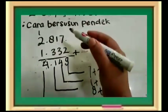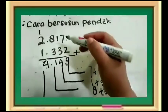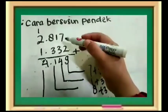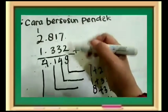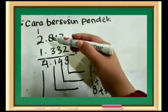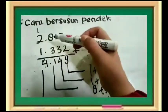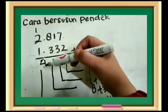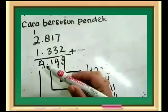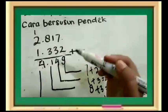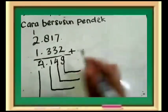Sebelum kita menjumlahkan, sebaiknya kita luruskan dengan hasilnya. Lihat. Satuan dengan satuan. Puluhan dengan puluhan. Ribuan, oh ini ratusan. Ratusan dengan ratusan. Dan ribuan dengan ribuan. Insya Allah, di bawahnya hasilnya akan sama dengan yang seharusnya.